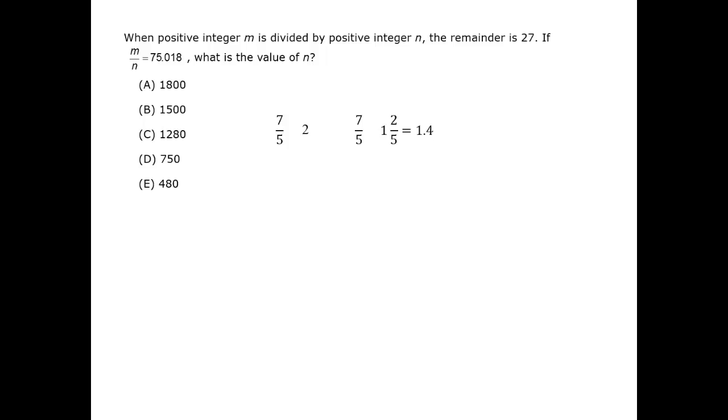Therefore, in this case, we can take the remainder of 27 and put it over the divisor in order to get the decimal portion. This allows us to solve for n. We get 27 over what appears to be a difficult-to-work-with number. But then by factoring out 3s and 2s, we're able to obtain 1,500. The correct answer is B.